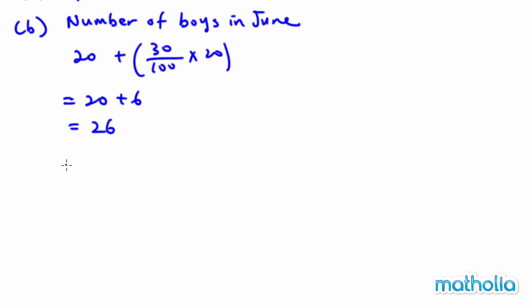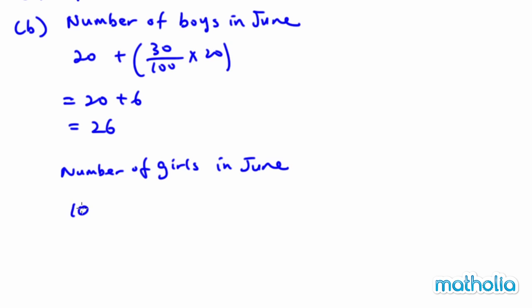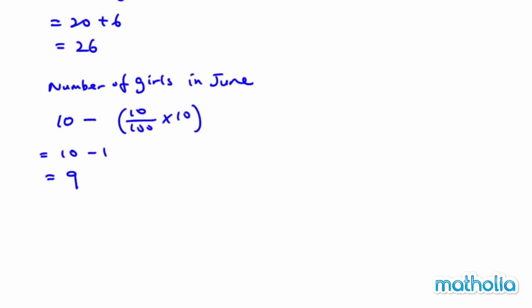For the girls, there is a 10% decrease. So 10 subtract 10% of 10, which is 1, giving us 9.